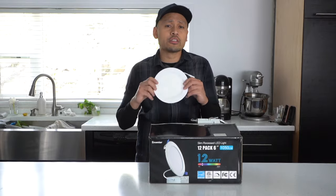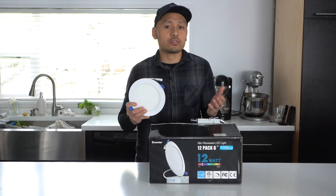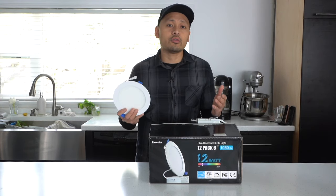These are actually also energy saver and they're 1050 lumens, which is pretty bright. So one of these can pretty much light up a whole room just by itself alone. In this case I'm going to be using two of them in this sink area of my kitchen.